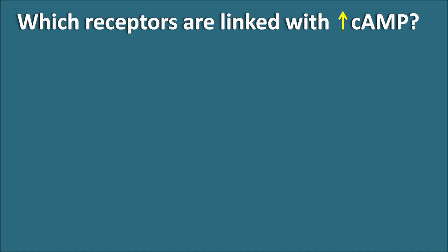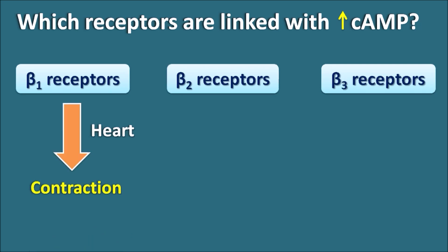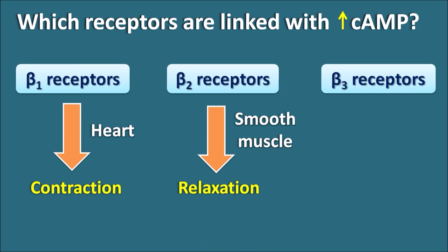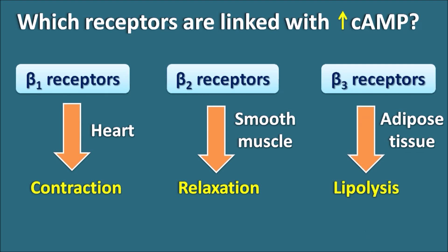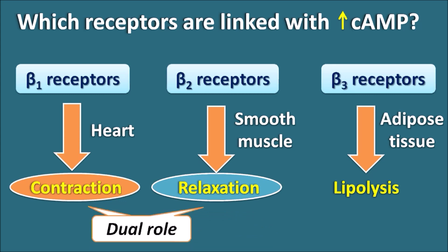Now let us see which receptors are linked with an increase in cyclic AMP. Adrenergic receptors — beta-1, beta-2, and beta-3 — are coupled with increased cyclic AMP. Beta-1 receptors are present on the heart and produce cardiac contraction; beta-2 receptors are present on smooth muscle and are responsible for smooth muscle relaxation; and beta-3 receptors are present on adipose tissue and are responsible for lipolysis, the breakdown of fat. Thus, cyclic AMP plays a dual role, mediating both contraction in the heart and relaxation in smooth muscle through adrenergic receptors.